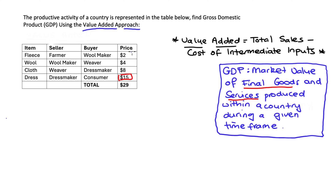When we find our value added, $15 is the number we're aiming for, and we can start at the beginning. From the farmer's perspective, given that they are at the beginning, we can assume they're not using any intermediate goods or services to make the fleece. So the cost of any intermediate inputs is zero for the farmer. Total sales is $2. So the value added by the farmer is total sales $2 minus the cost of intermediate inputs $0, which equals $2.